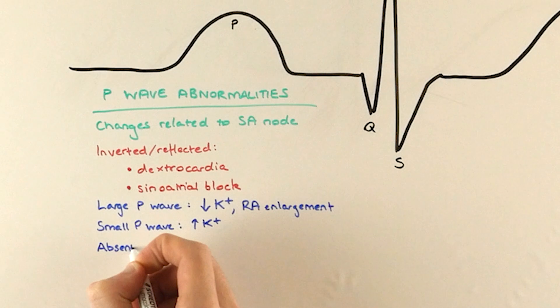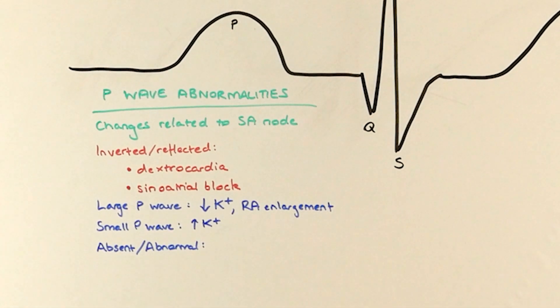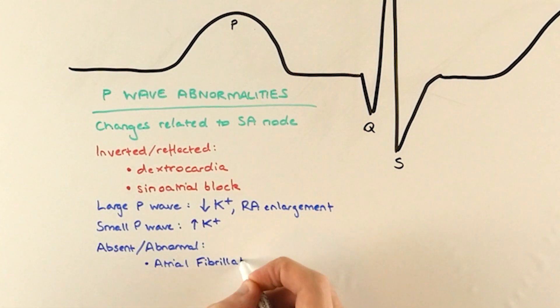And a small P wave might be due to hyperkalemia, or too much potassium. If you can't see these normal looking P waves, we need to consider atrial fibrillation and atrial flutter, but we'll discuss those in another video.